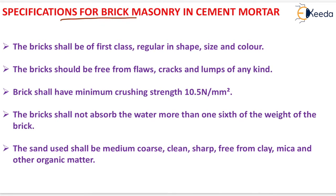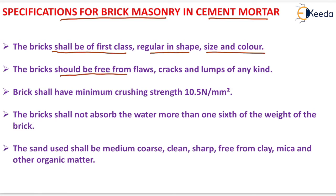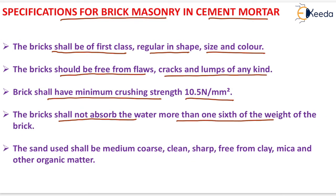Next is the specification for brick masonry in cement mortar. The brick shall be of first class, regular in shape, size and color. The brick should be free from flaws, cracks and lumps of any kind. Brick shall have a minimum crushing strength of 10.5 N per mm². The brick shall not absorb water more than one-sixth of the weight of the brick. The sand used shall be medium coarse, clean and sharp.